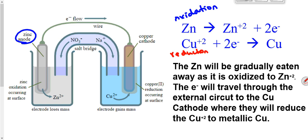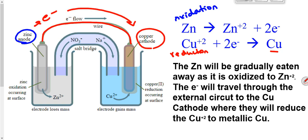On the reduction side, I need Cu²⁺ ions, which could come from copper chloride, copper nitrate, or any soluble source of copper. And I need copper metal as a strip — that will be my cathode. I attach the anode and cathode in the external circuit using a wire. Electrons always travel from anode to cathode through the wire, every time.